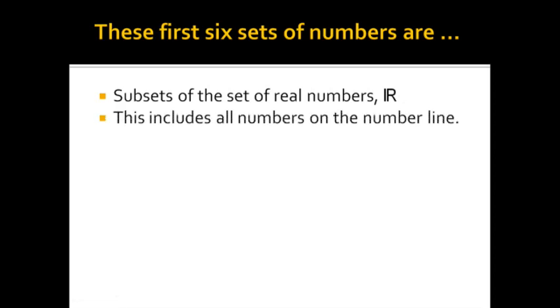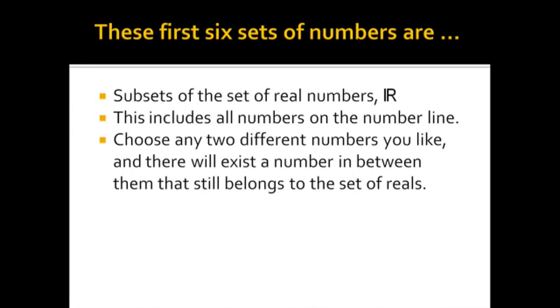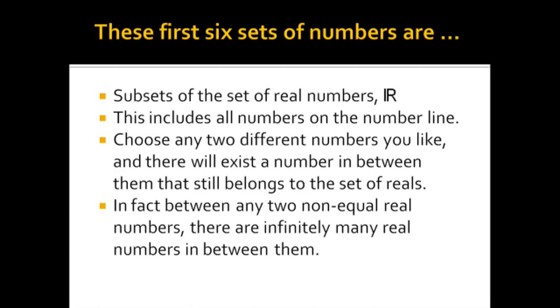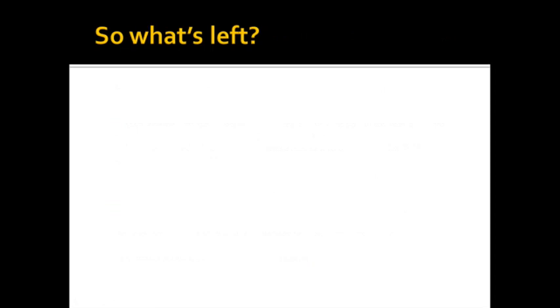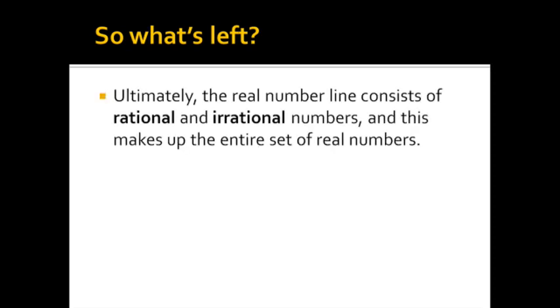This includes all numbers on the number line. If you pick any two numbers on the number line that are not equal, you can find a number in between those two numbers. And it doesn't matter how close together you pick those two numbers. But it gets better than that, that really between any two of those numbers, no matter how close you make those numbers without being equal, you can find infinitely many real numbers on the number line between any two numbers you choose, no matter how close. That doesn't leave much left over. So one might ask, well, we have the real numbers, and it would be imagined that they're just all numbers that are conceivable. So ultimately, just to recap the past six sets, those six sets boil down to rational and irrational numbers, and that makes up the entire set of real numbers. They're either rational or irrational.